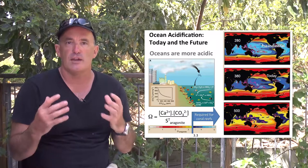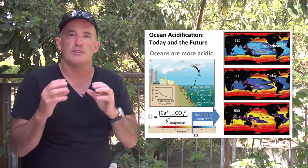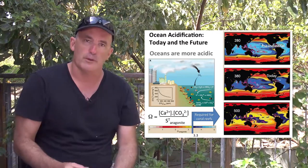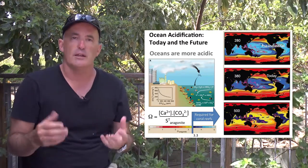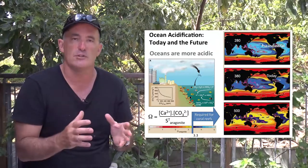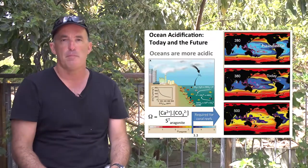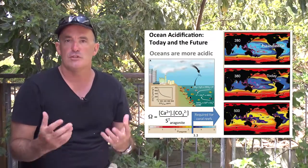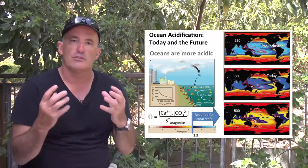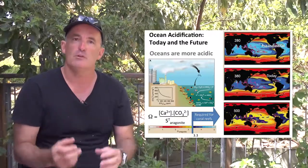The aragonite saturation state varies with the average temperature of the ocean, primarily because carbon dioxide likes to dissolve in cold water more than warm water. Consequently, the highest aragonite saturation states exist at the lower latitudes and the equatorial regions of the planet. When one surveys the literature, it becomes clear that the carbonate reef systems of the world are restricted to oceans that have aragonite saturation states of 3.3 or more.